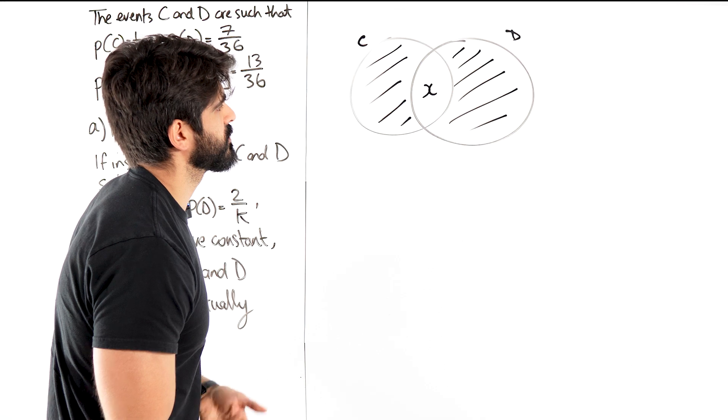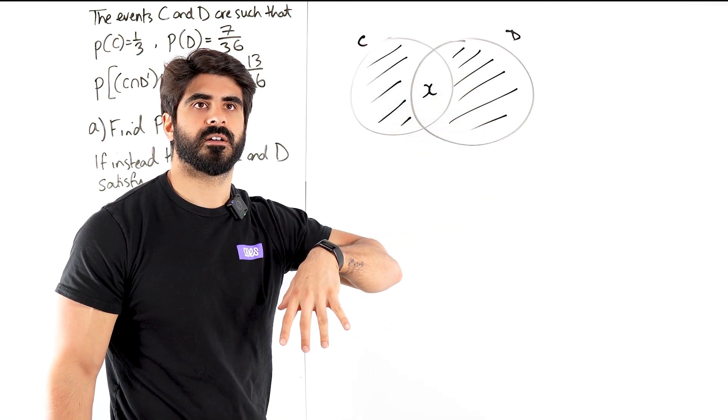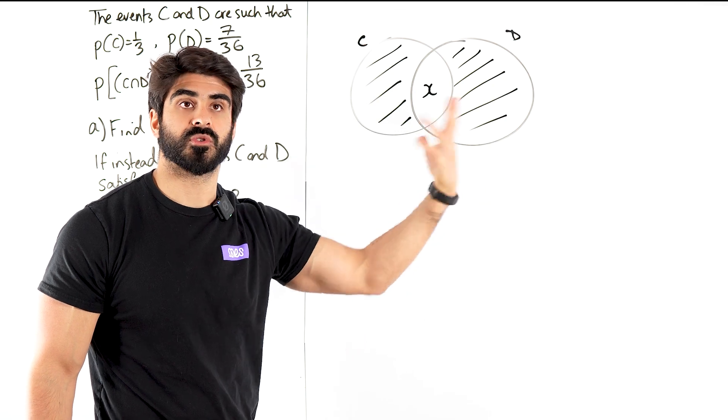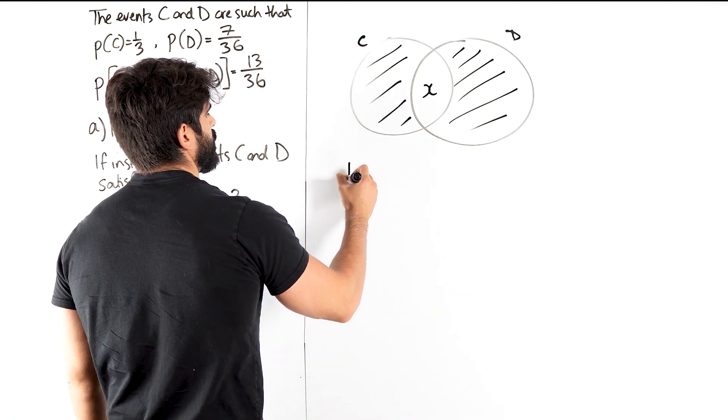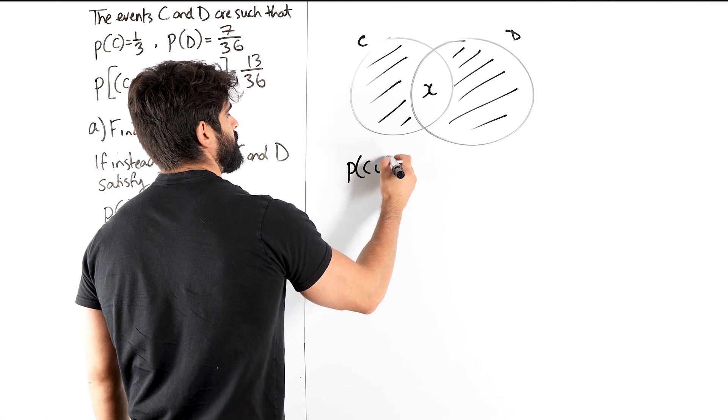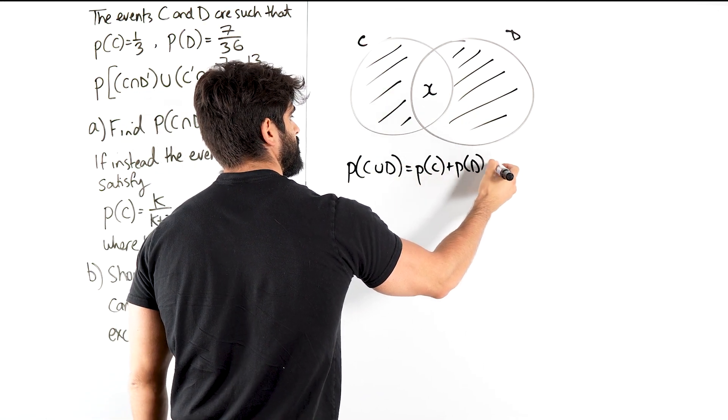I mean, this is giving me vibes of the addition rule. So all of these things together make A or B, or C or D in this case. So here, the probability of C or D is the probability of C plus the probability of D minus the intersection.